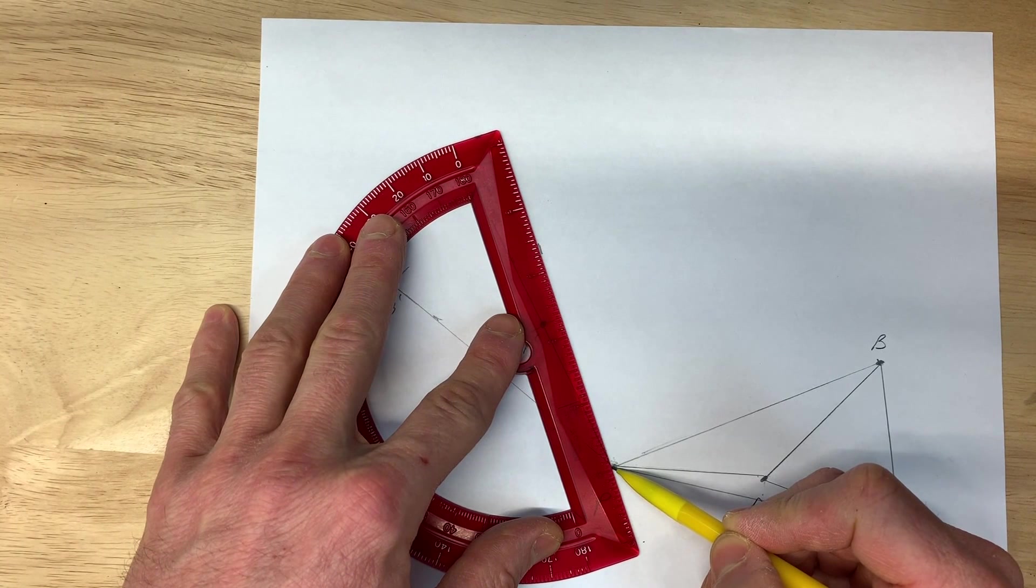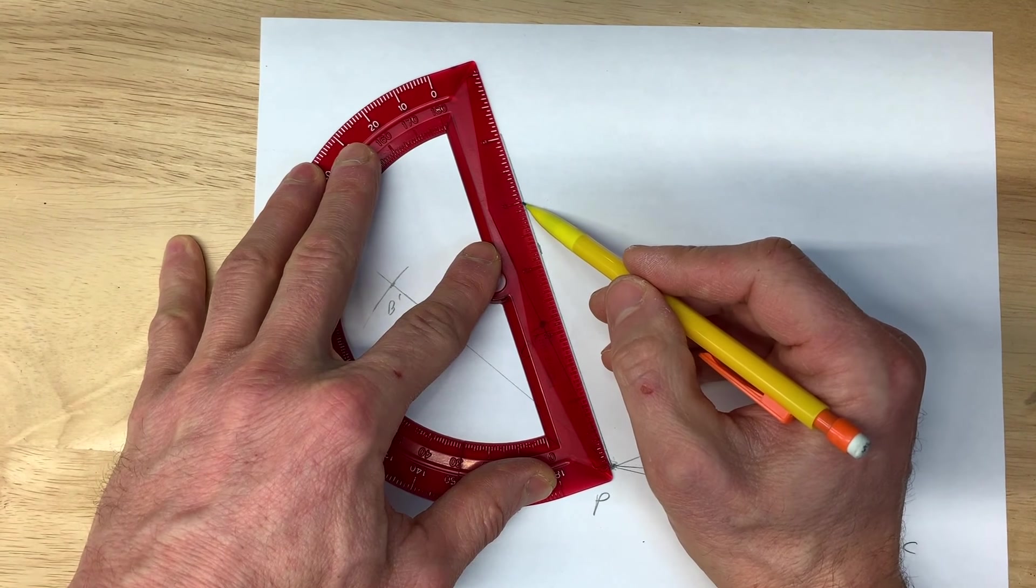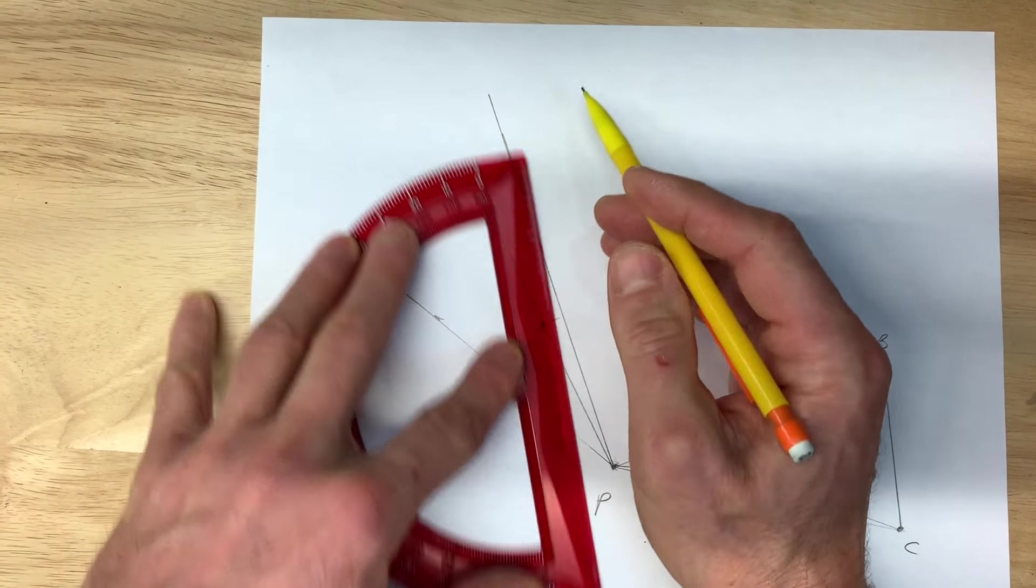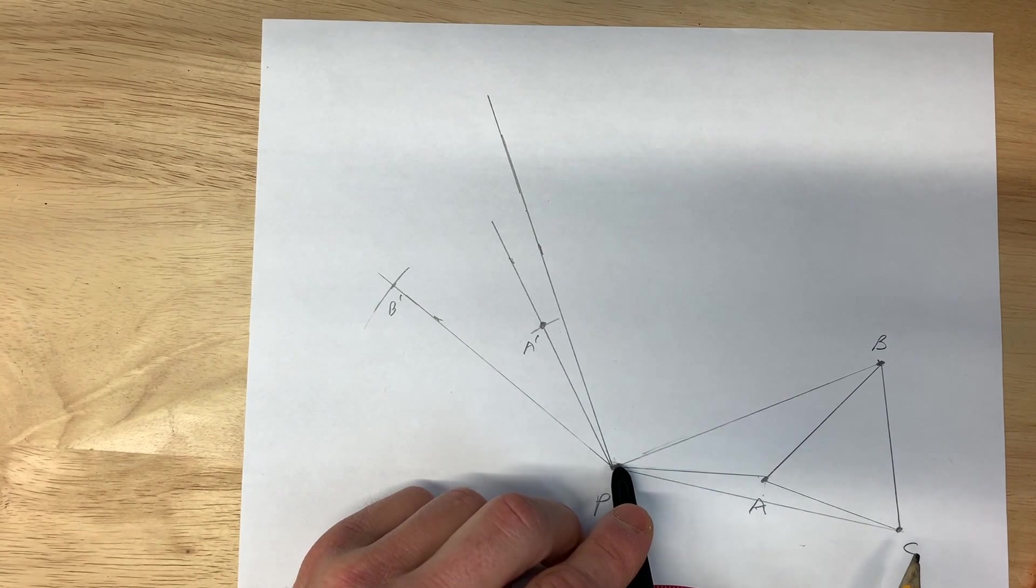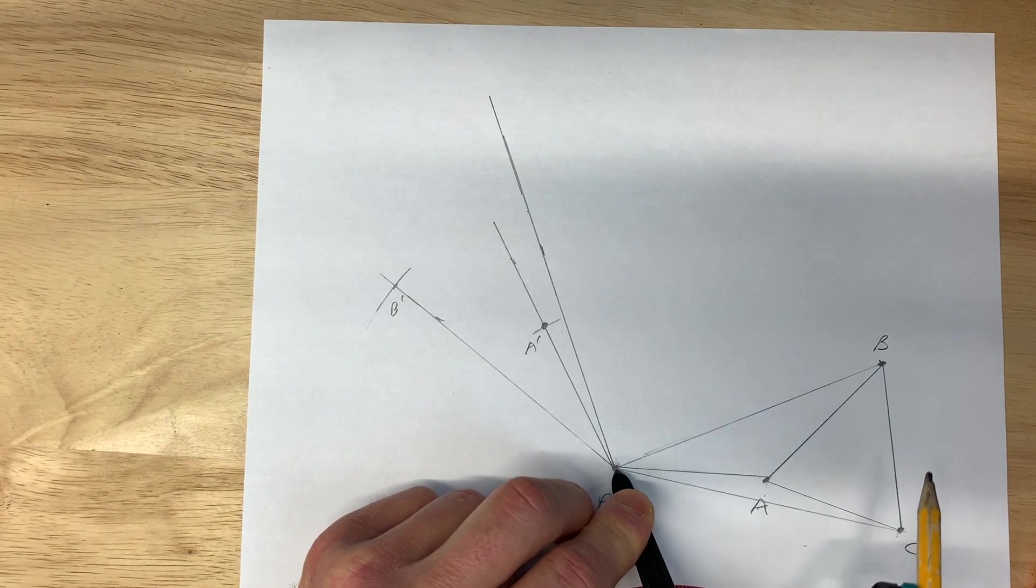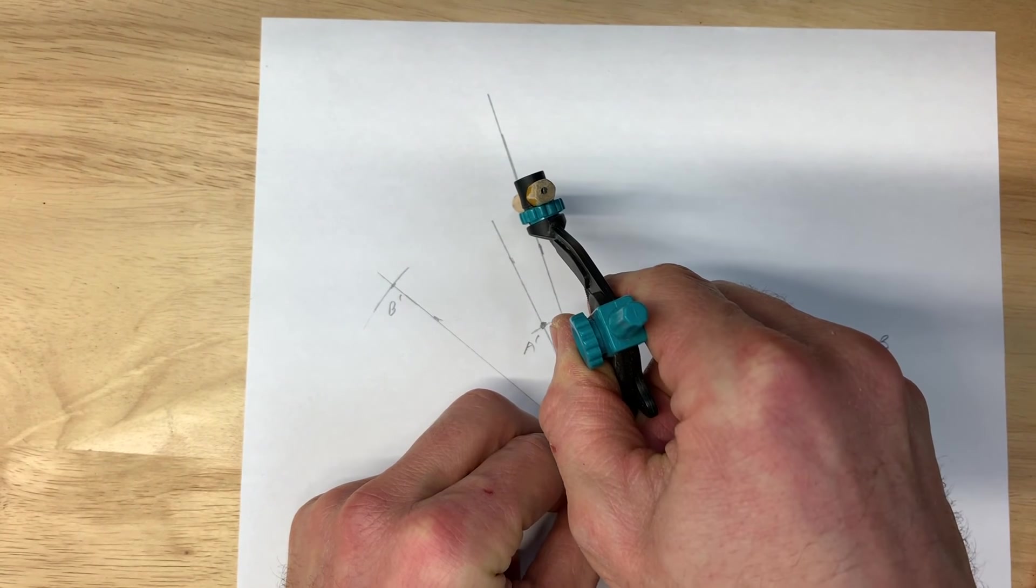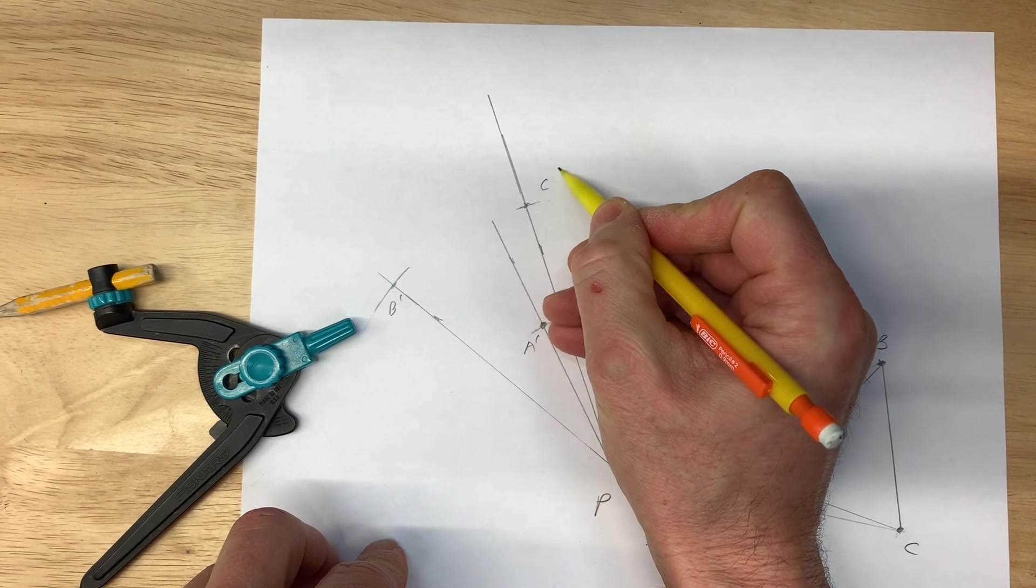It's good to make your lines a little bit longer than you think you need, just so you don't have to go back and extend it. Now use your compass to measure that distance from P to C. Then we rotate around, make an arc, and you can see it's crossing right there. That's going to be the location of C prime.